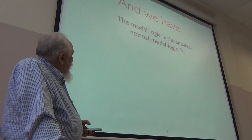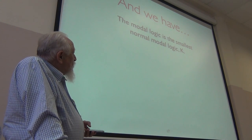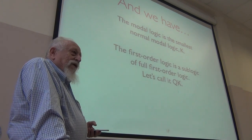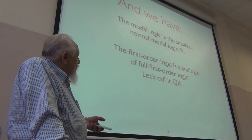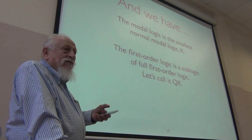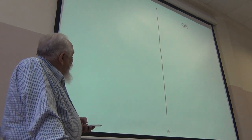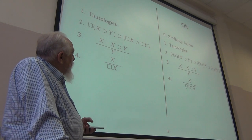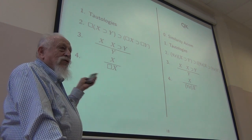So, the definitions, the modal logic you saw is the smallest normal modal logic. It's called K. So, the quantificational system you just saw, it's a subsystem of full first order logic. I'll call it QK, the analog of K. So, here they are in parallel. This is what makes up K, and this is what makes up QK. There's that extra similarity thing, but otherwise, they match up exactly.